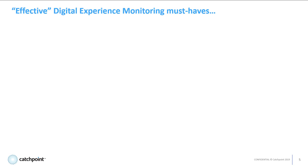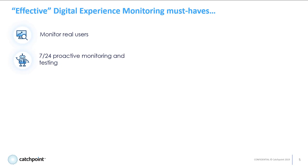There are several must-haves for an effective digital experience monitoring strategy. To start, you need to monitor real users and understand what they're experiencing, as this is really the whole point. But you don't want your users telling you there's a problem — you need 7x24 proactive monitoring. This monitoring needs to be robotic in nature, continuously monitoring all the systems, and this testing must be from everywhere, because that's where your customers and users are — they're global.